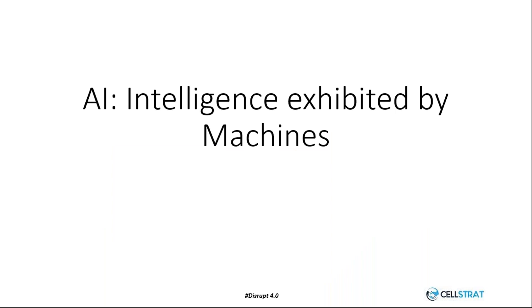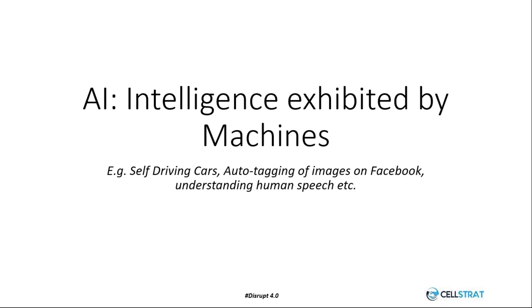What is AI? AI is intelligence exhibited by machines. True AI has not yet been achieved, but the world is moving towards it. We are already seeing examples like autonomous cars, auto-tagging of images on Facebook, understanding of human speech, NLP, chatbots, higher-definition cameras with analytics, and more.